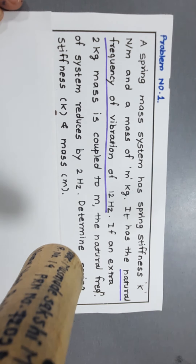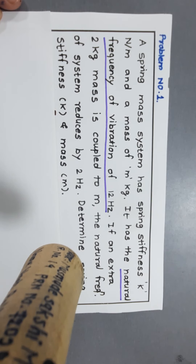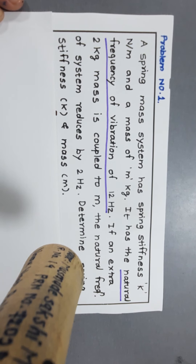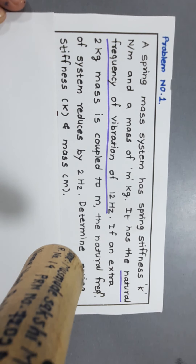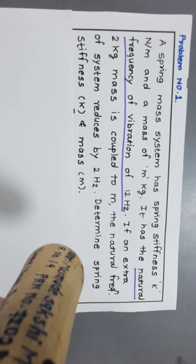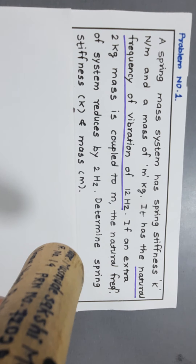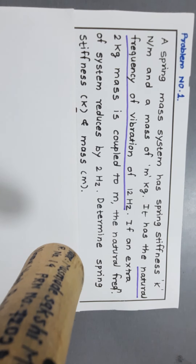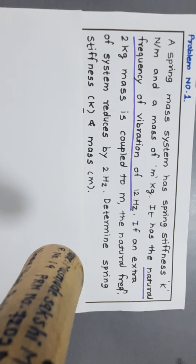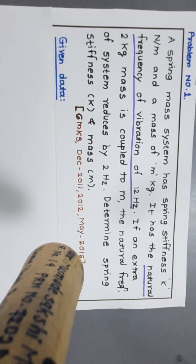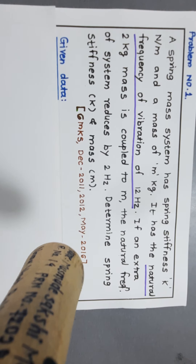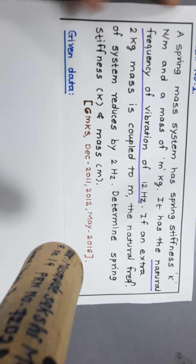This is the problem statement. A spring-mass system has spring stiffness k (in Newton per meter) and a mass m (in kg). It has a natural frequency of vibration of 12 Hz. If an extra 2 kg mass is coupled to mass m, the natural frequency of the system reduces by 2 Hz. Determine the spring stiffness k and mass m. This numerical was asked in the SPPU examination for December 2011, December 2012, and May 2016.